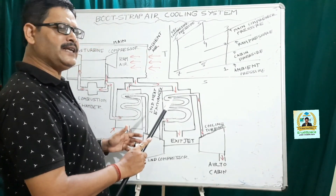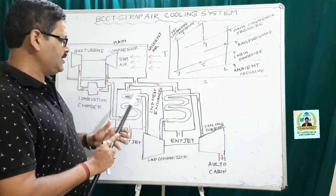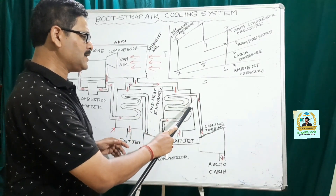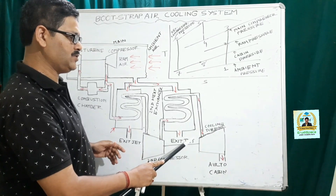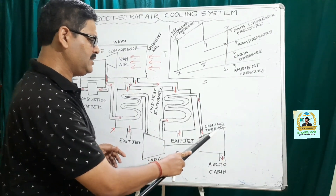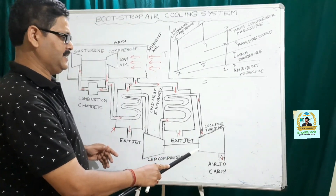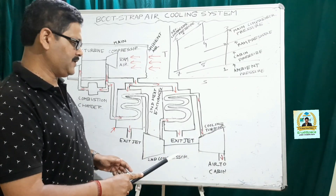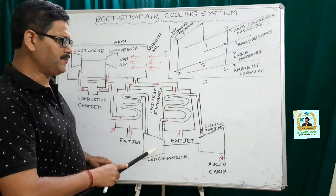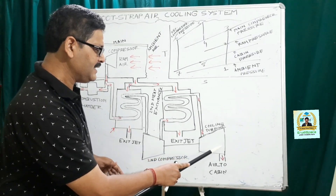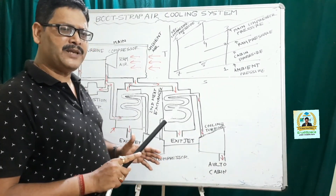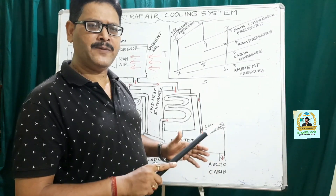After cooling in two stages — in the first and second heat exchanger — the air whose temperature has been significantly reduced actually enters the cooling turbine. In the cooling turbine it expands and the power that is developed is actually used to run the second compressor. This air then enters the cabin or cockpit.